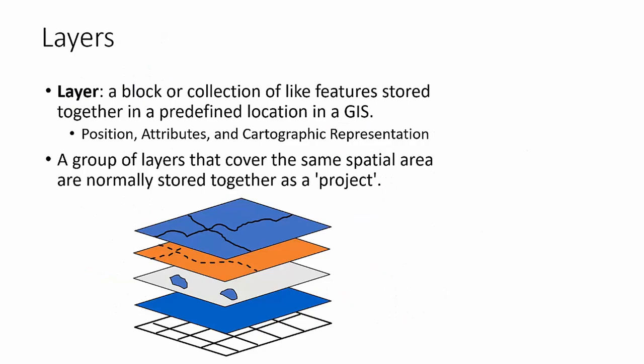GIS can represent a variety of things in different ways. Typically, when working with GIS data, we aggregate it into a layer — a collection of like features stored usually in a common location. Some layers are global and have coverage for the whole world. A layer contains the spatial information, position, attributes, and usually the cartographic representation as well. Layers are often limited to points, lines, and polygons, and sometimes 3D models — called multi-patches in the GIS world.